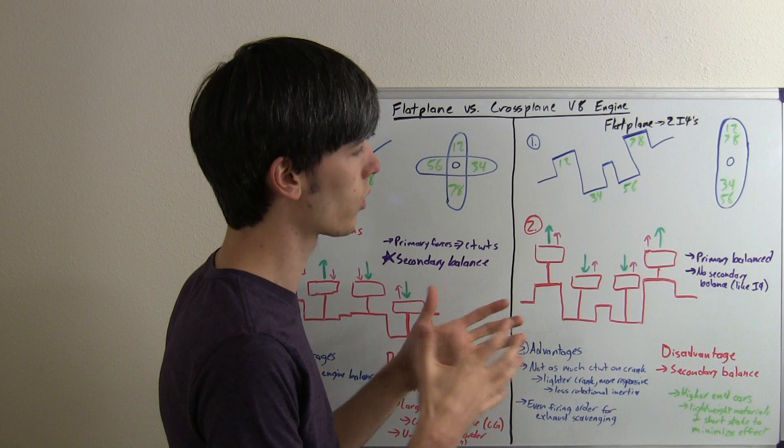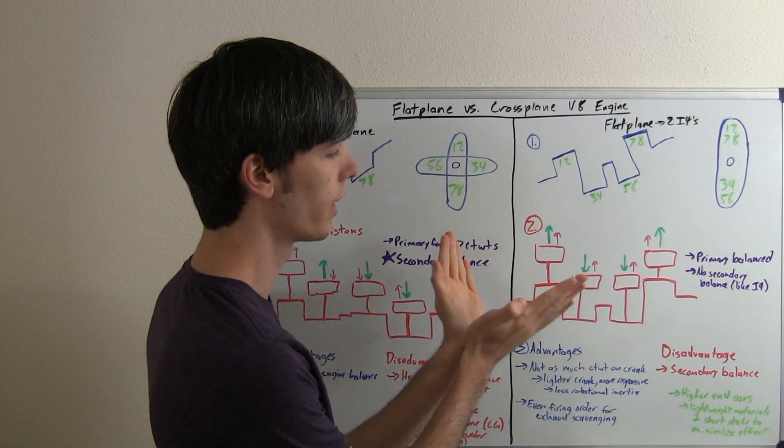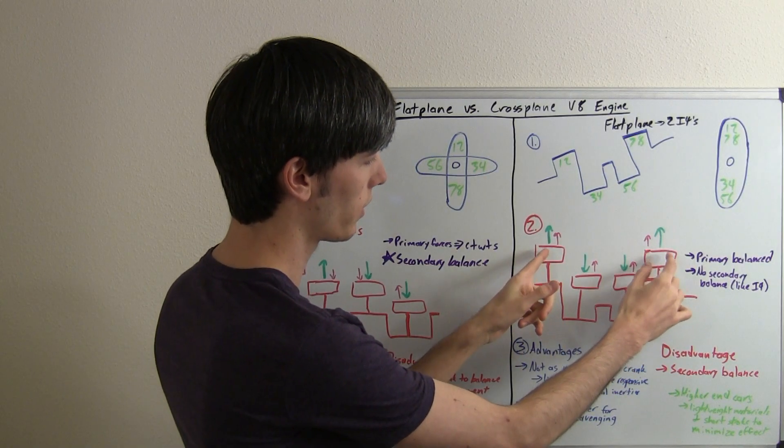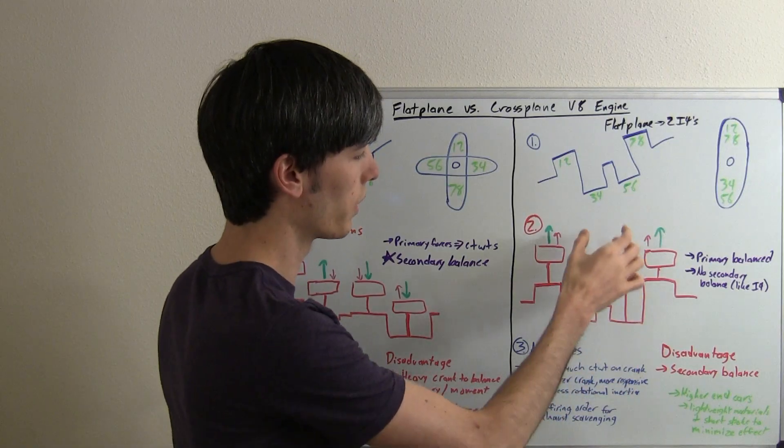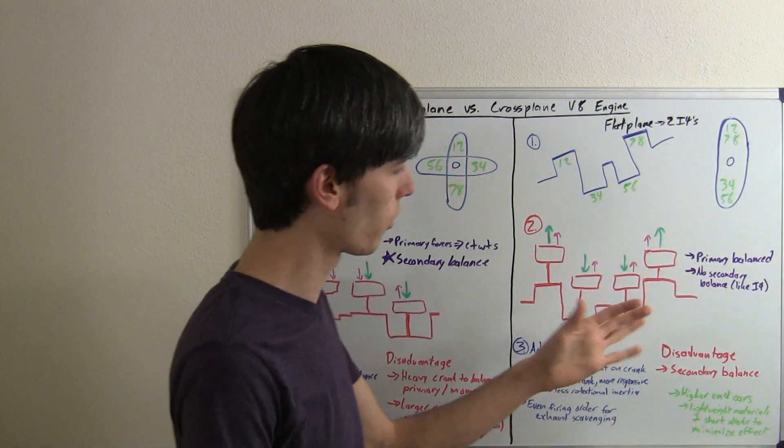So basically a flat-plane engine is the equivalent of two inline four-cylinders. So this flat-plane V8 is basically two inline fours, where you've got the first and fourth piston are going to be in unison, going up and down, and then the second and third will be together, going up and down. Now if you've watched my video on four-cylinders,